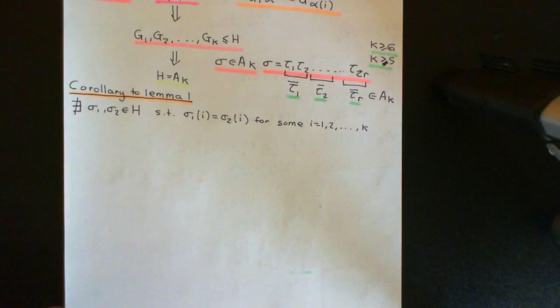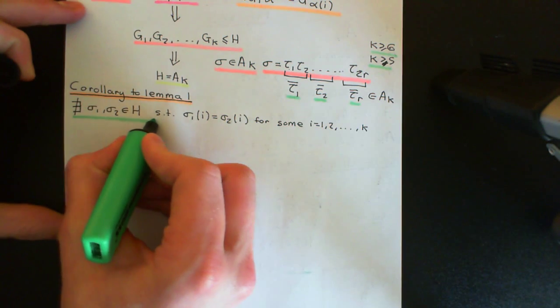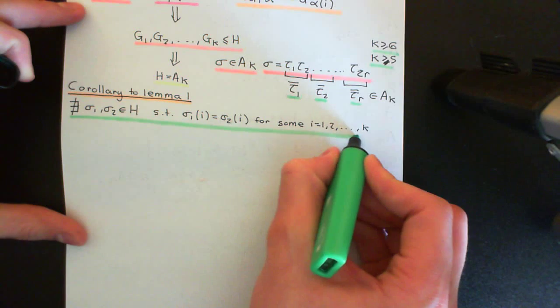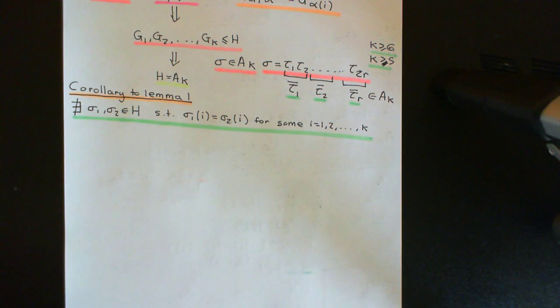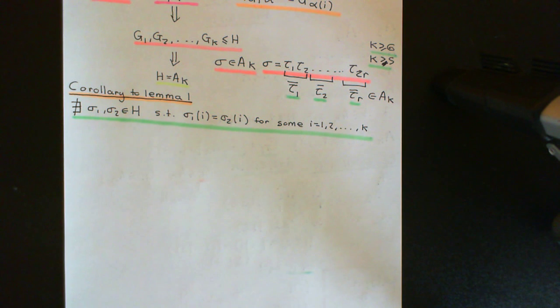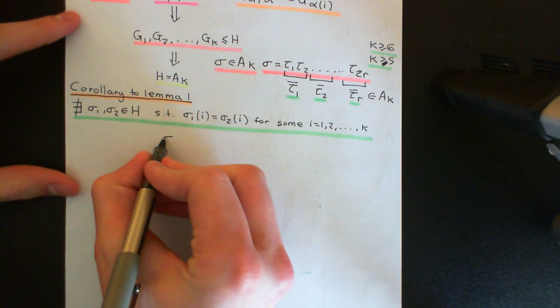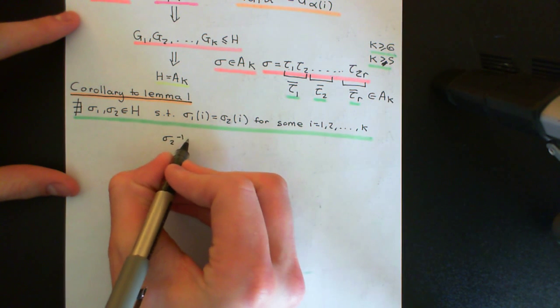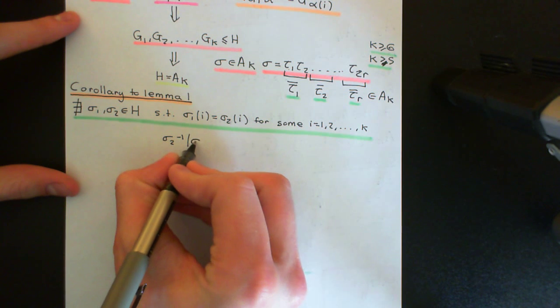Hopefully it should be instantly obvious as to why that is. H is a subgroup, and what could we do if this were the case? The simple way to prove this is to assume the opposite — assume that we do have two permutations in H that map a certain element i onto the same thing. Then we could consider sigma_2 inverse of sigma_1 of i.